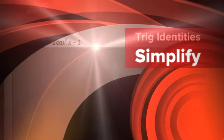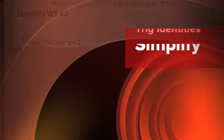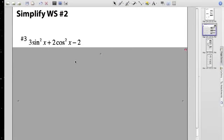Alright, simplify worksheet number two, we get number three. This time I chose this one because it has the mixture of sine squared and cosine squared. I know that during the week we discussed talking about changing the whole thing to one trig identity.